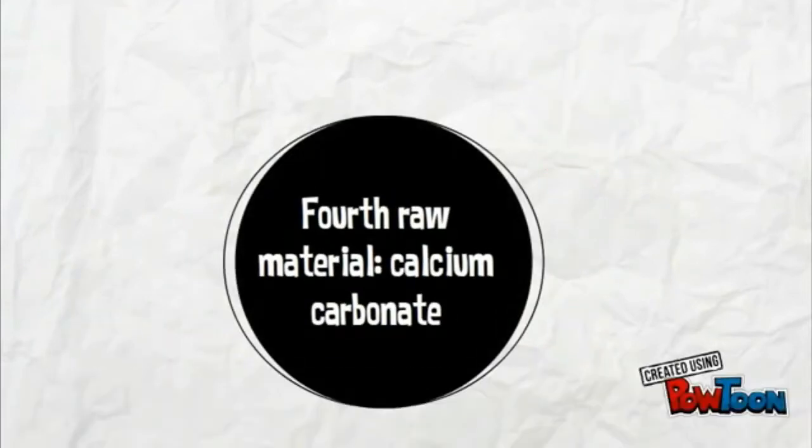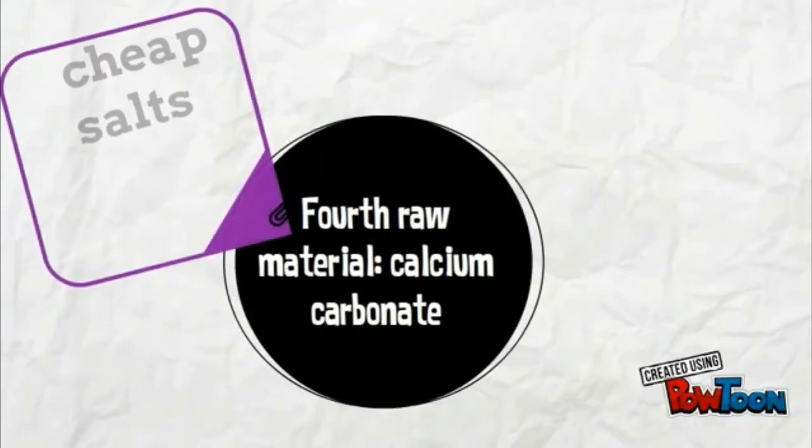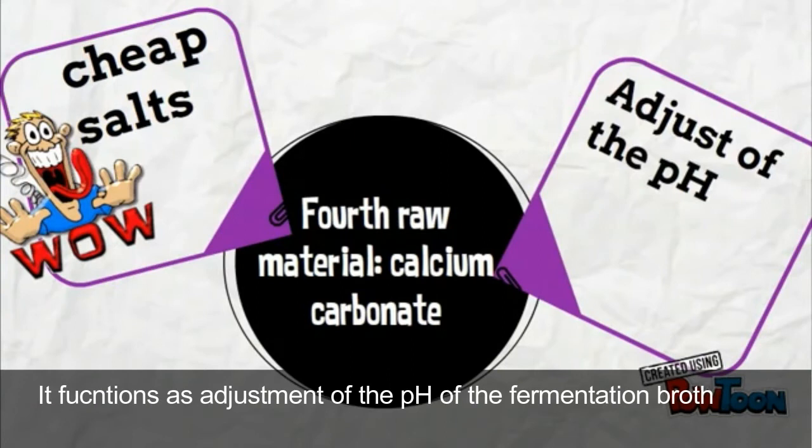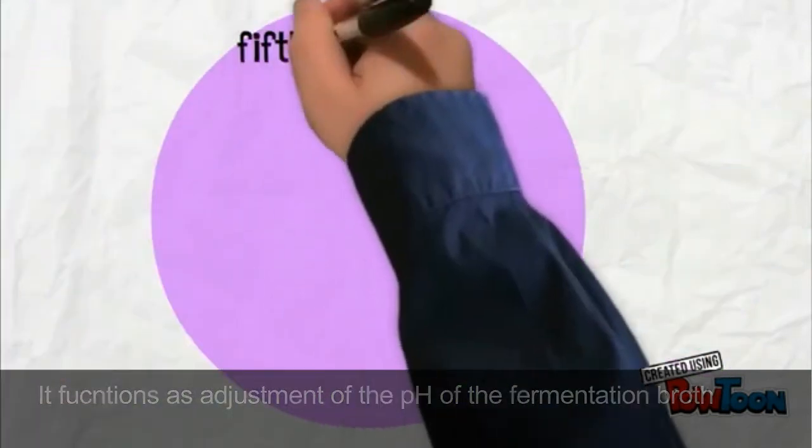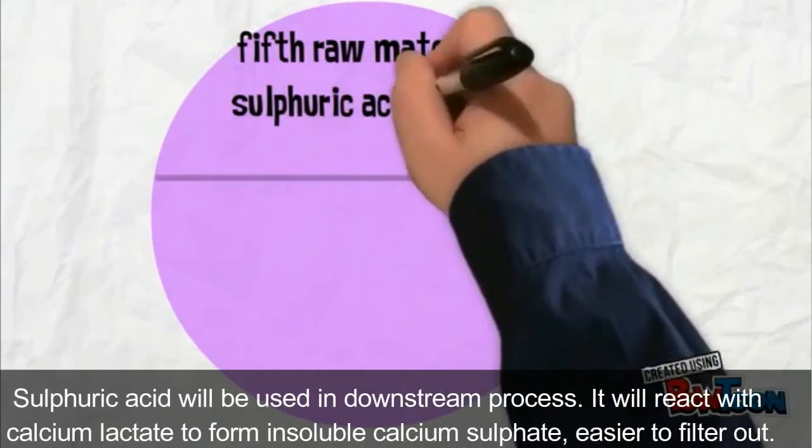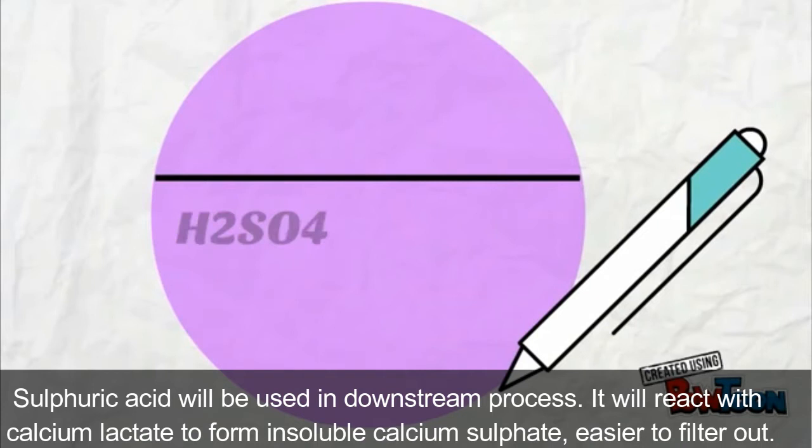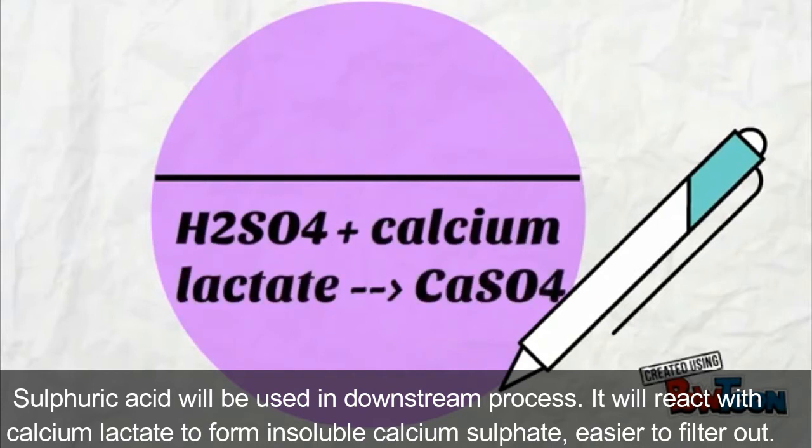Fourth raw material is calcium carbonate. Calcium carbonate is usually the least expensive of the salts available for this purpose. It functions as adjustment of the pH of the fermentation broth. Fifth raw material is sulfuric acid. Sulfuric acid will be used in downstream process. It will react with calcium lactate to form insoluble calcium sulfate, easier to filter out.